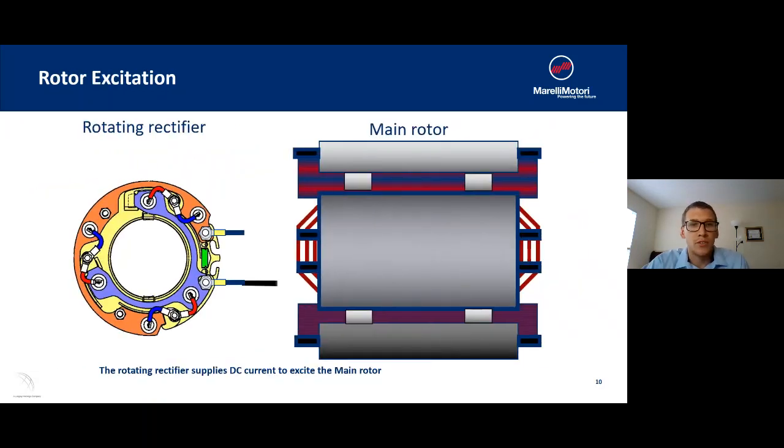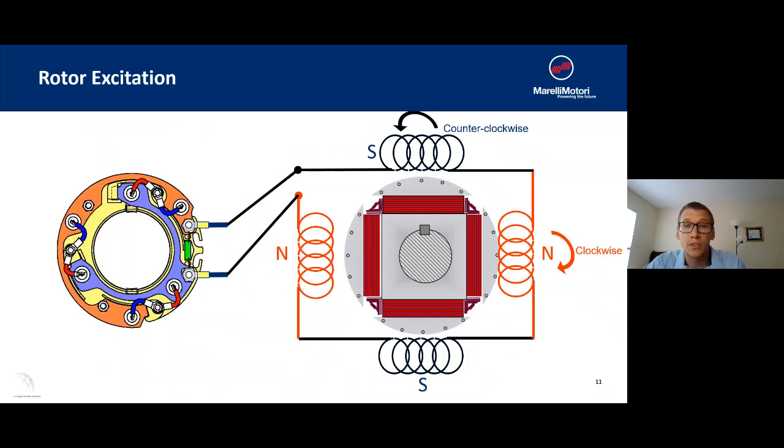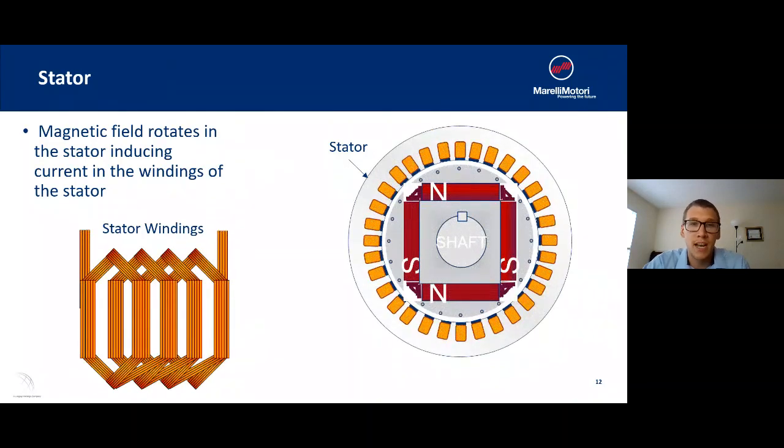How this really works to create the magnetic field is the rotating rectifier is going to inject that DC current into the main rotor, and then the main rotor is wound very similar to the exciter stator where you have sets of clockwise or counterclockwise windings which create a north or a south pole. What we're looking at here is an example of a four pole main rotor which is what our standard stock generators keep. The main rotor then will rotate inside of the main stator. The main stator is also made up of a few sets of windings and as this magnetic field rotates inside the stator it's going to induce the current into the windings of the stator which is where you're going to get your output.